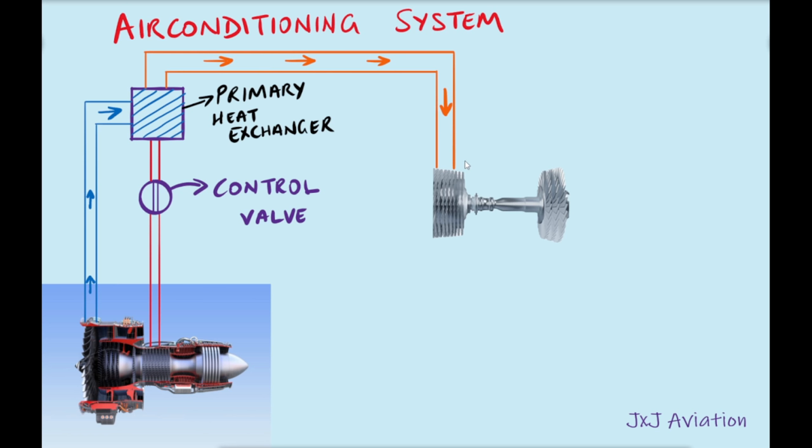This air is then sent to an air cycle machine. The air cycle machine is mainly responsible for providing cold conditioned air to the aircraft. The air cycle machine consists of a compressor and a turbine connected to a single shaft.